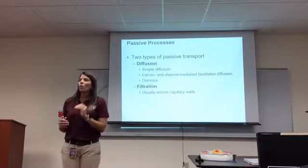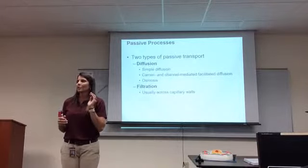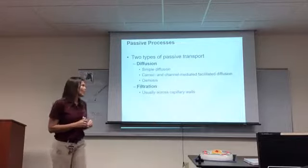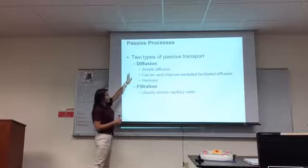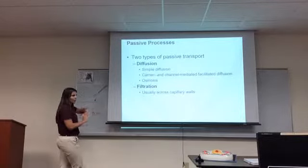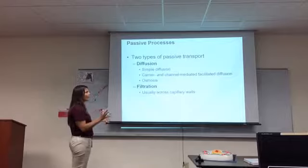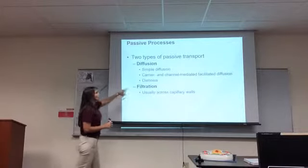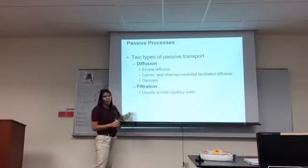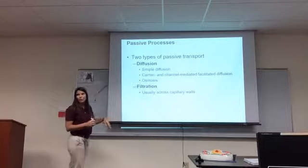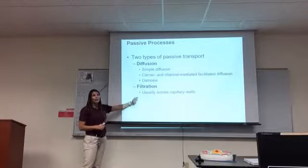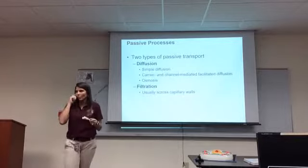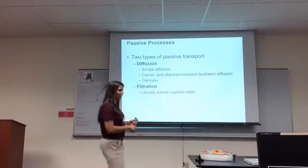Diffusion could be any type of electrolyte — salts, potassium, calcium — going from high to low. Osmosis is water going from high to low — it's just being more specific. Filtration is still going from high to low, but it specifies a particular pathway — it specifies how you get there. So filtration is facilitated diffusion that specifies the route.